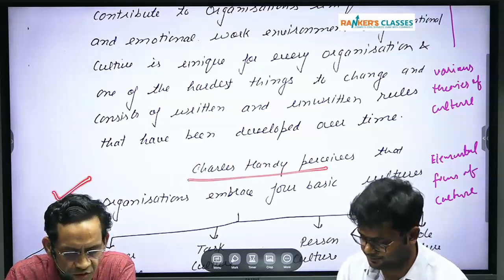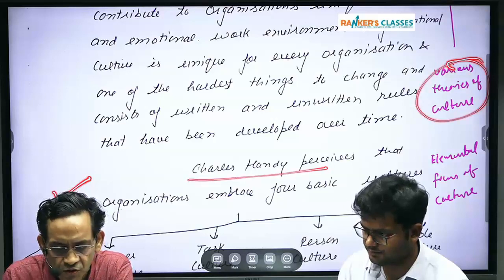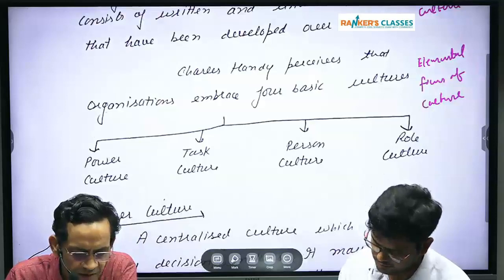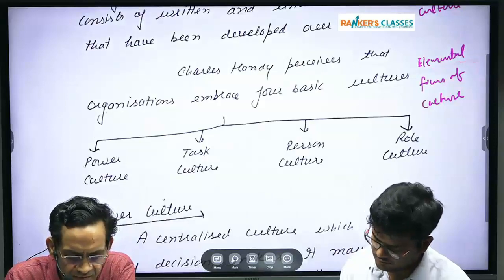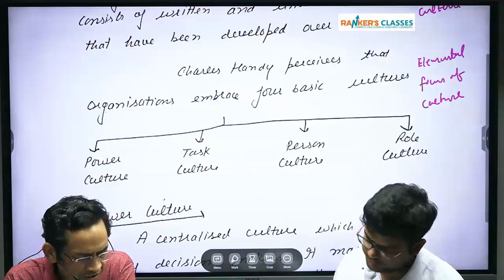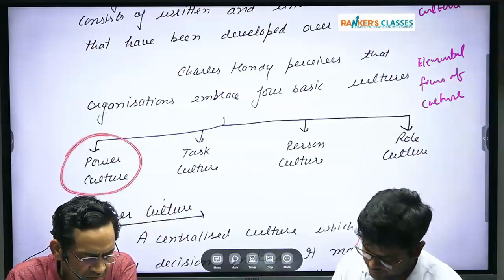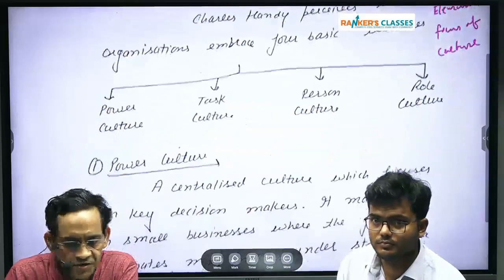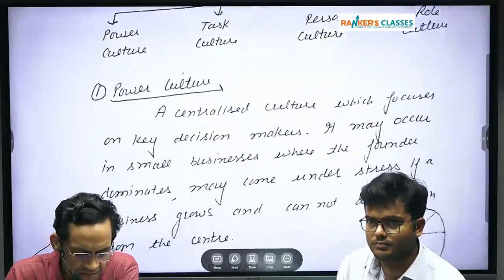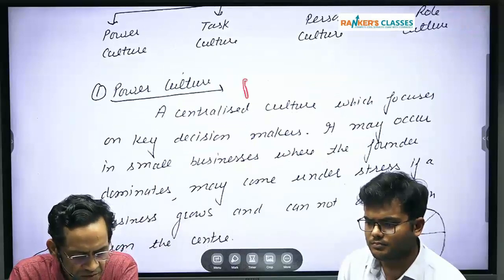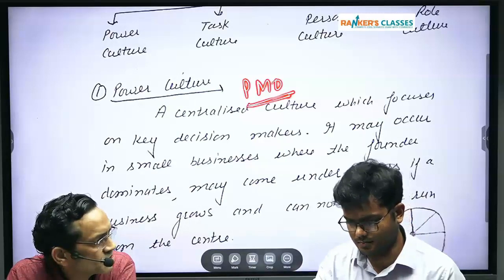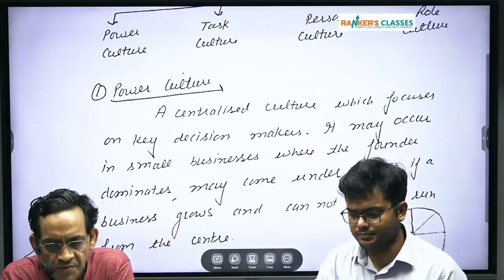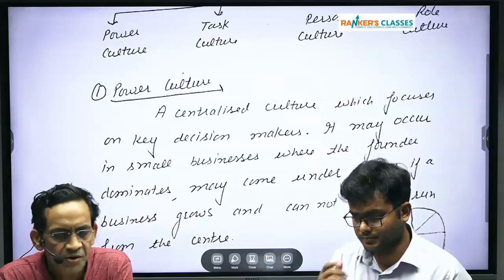You could start with various theories of organization culture and thereafter Charles Handy. Charles Handy provided elements of any organization culture: any organization may have power culture, task culture, person culture, or role culture. For example, the Prime Minister's Office — PMO — will exhibit power culture, and the Superintendent of Police's office also has power culture, because the main task is use of power to make decisions or allocate resources. Examples must be given.